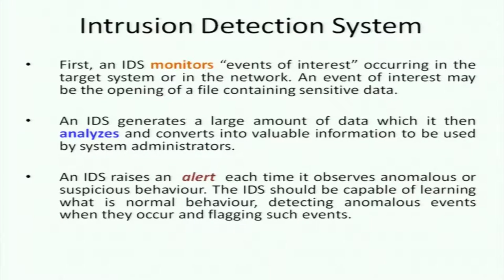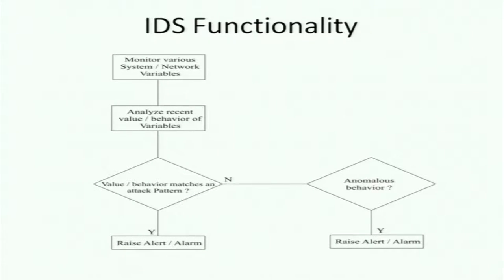What is exactly meant by 'normal'? Is this the normal number of logins per day? Is this the normal number of TCP packets coming in? You establish a baseline, and whenever something goes very high or very low compared to that baseline, you take action. The first step is to monitor various system or network variables, analyze their recent behavior to find the norm, then check if any particular behavior matches an attack pattern.